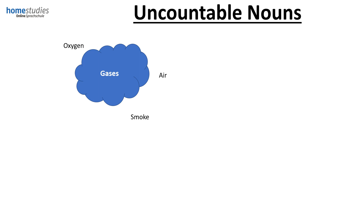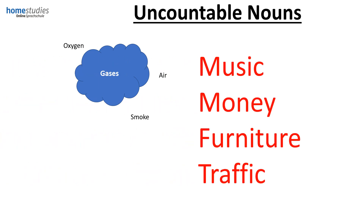Now let's have a look at some uncountable nouns that most students think are countable. Music — it's uncountable. Also, money is uncountable. Furniture and traffic — they are also uncountable nouns. So be very careful with these.